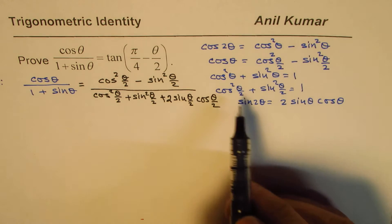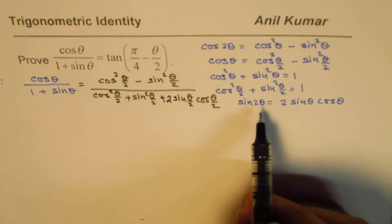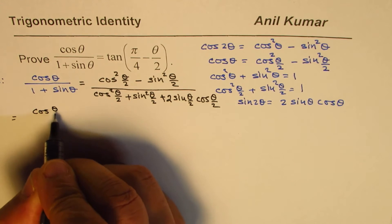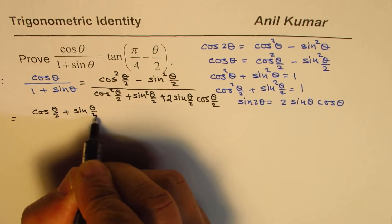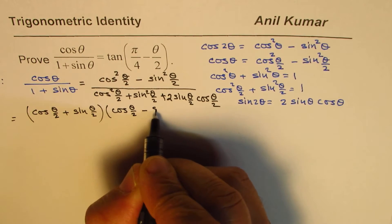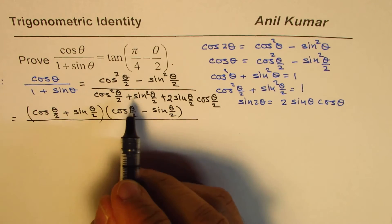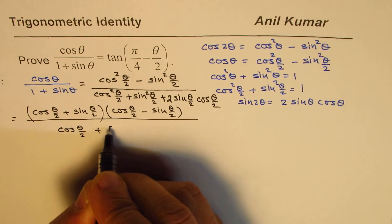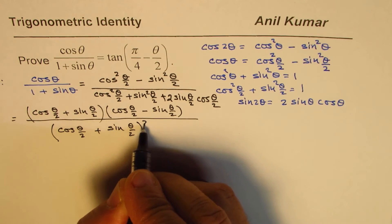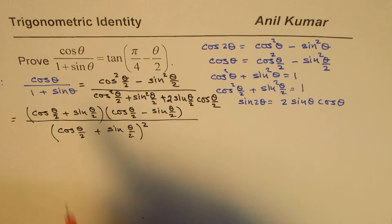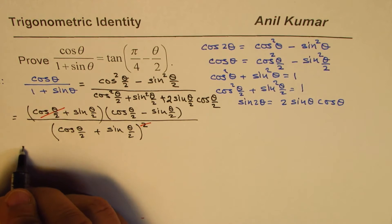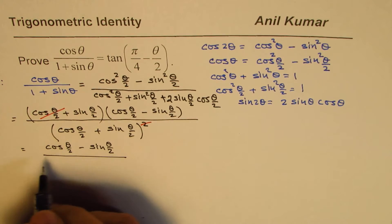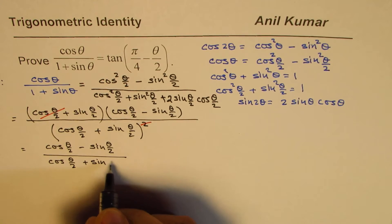So we have translated all formulas into half-angle formulas. The numerator factors as a difference of squares: cos²(θ/2) minus sin²(θ/2) equals [cos(θ/2) + sin(θ/2)][cos(θ/2) − sin(θ/2)]. The denominator is a perfect square — a² + 2ab + b² — so it becomes [cos(θ/2) + sin(θ/2)]².